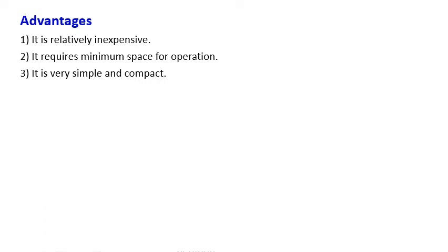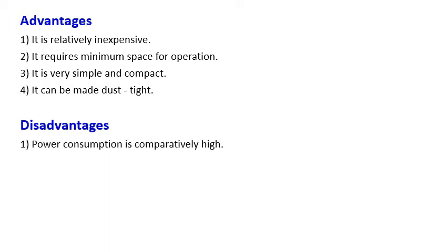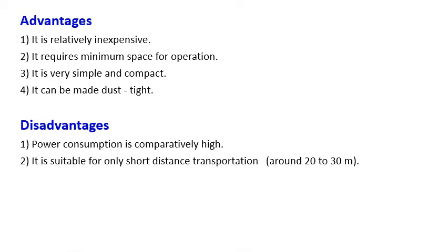Advantages of screw conveyors: relatively inexpensive, requires minimum space for operation, very simple and compact, and made dust-tight so coal powder wastage is avoided. Disadvantages: power consumption is comparatively high, suitable only for short-distance transportation of around 20 to 30 meters — much less than belt conveyors. Wear and tear of parts is more, and jamming may take place, especially when coal has moisture above recommended levels, requiring manual clearing.